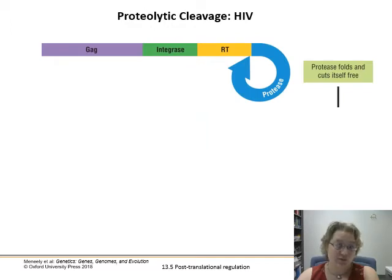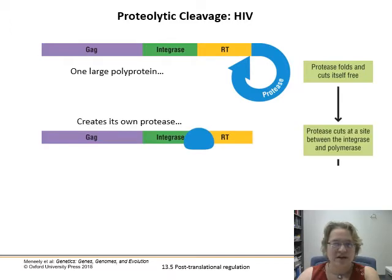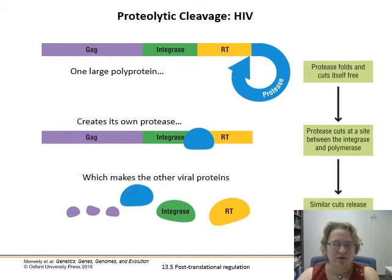HIV does this too. When proteins are expressed in an HIV-infected cell, the virus makes a long polypeptide polymer chain. The first thing that happens is the protease folds itself up and cuts itself free. That creates an active protease which then cuts between the integrase and the reverse transcriptase, making the other viral proteins. This all happens post-translationally within this big polyprotein — cutting itself to make more components to infect more cells. It's one of the reasons HIV is so insidious and hard for cells to fight.